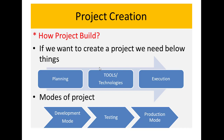We will understand how the project is created. This is not a big definition, but if you want to understand it deeply, it is different from project management — in this ReactJS series, we don't need to go into that much detail. Simply, if someone asks us, we need to explain: what happens in the project? First there is planning, then tools and technology, then execution — where you write code. Then there are modes: development mode, then testing, then we send it to production or deploy.